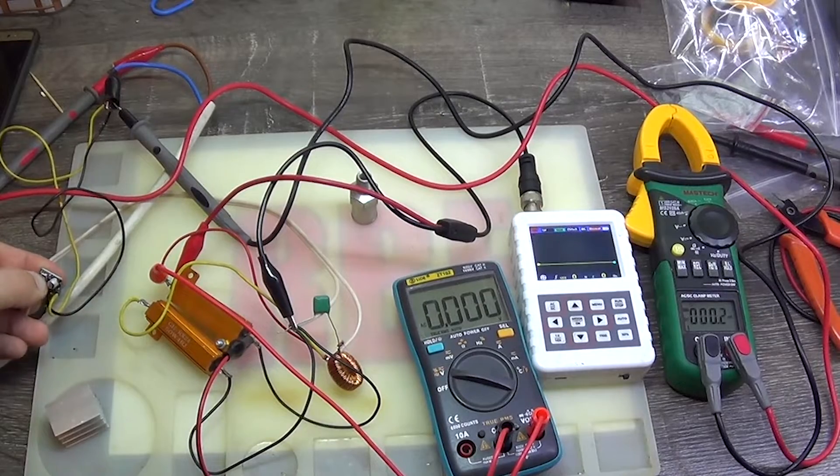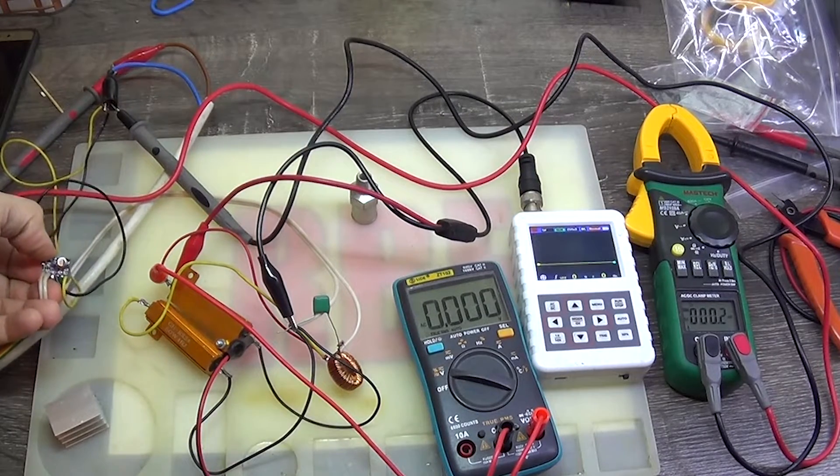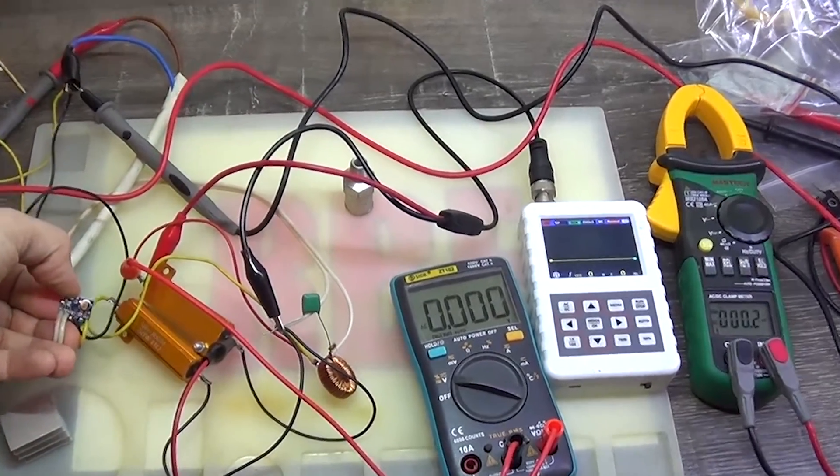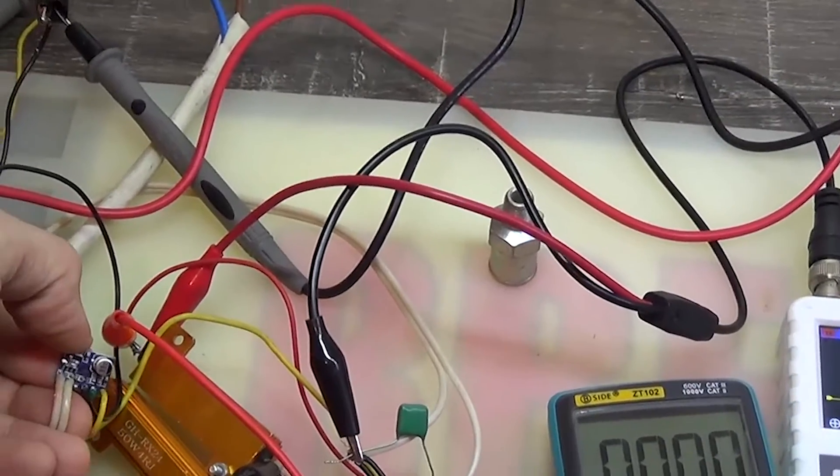It turns out that on a 2 ohm load, the maximum it can produce is 6.5 watts of pure signal with a maximum power supply of 7 volts. After that, the chip burns out.